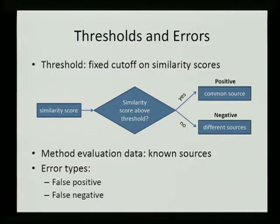To put this into the language of ROC curves, we'll label the case of common source as positive and the case of different sources as negative. In order to evaluate the performance of a method, we need reference data whose true sources we actually know. There are two types of errors: a false positive occurs when two samples from different sources are indicated as having a common source, and a false negative occurs when two samples from the same source are suggested to come from different sources.